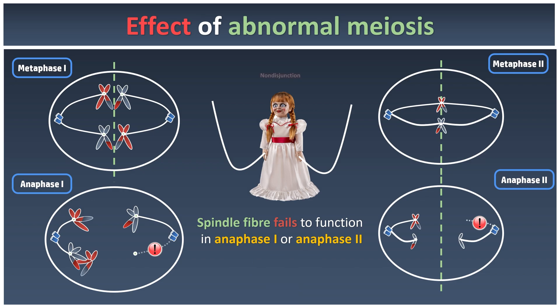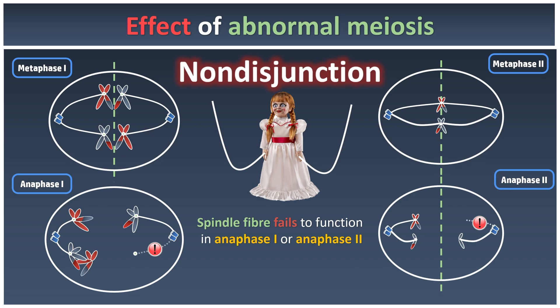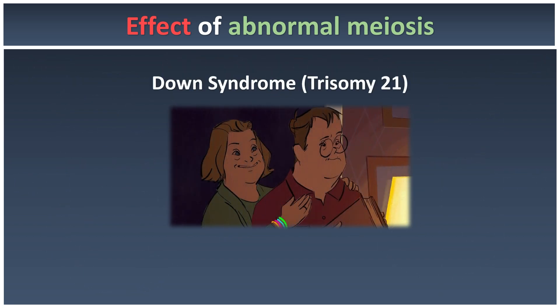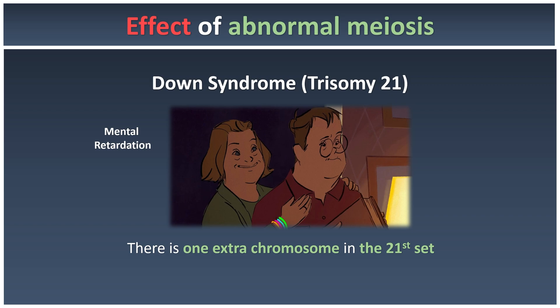This situation is what we call non-disjunction, where the chromosomes fail to separate correctly. This eventually causes a disease called Down syndrome, also known as Trisomy 21. This happens when there is one extra chromosome in the 21st set of chromosomes. Some of the symptoms include a lower IQ, known as mental retardation, as well as physical characteristics like slanted eyes, a protruding tongue, and a very broad forehead.